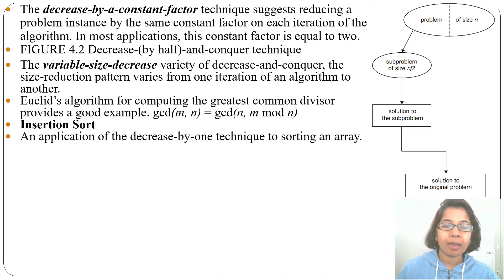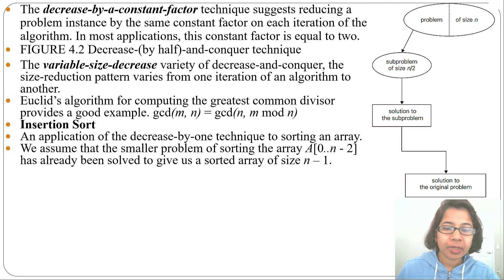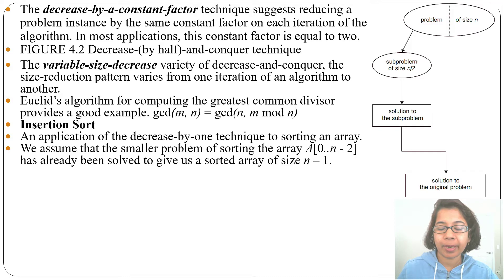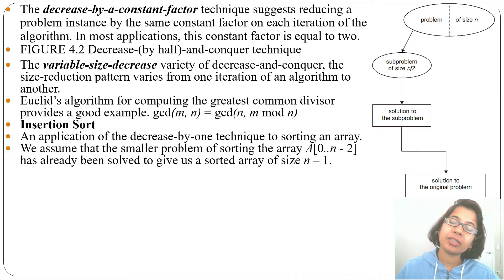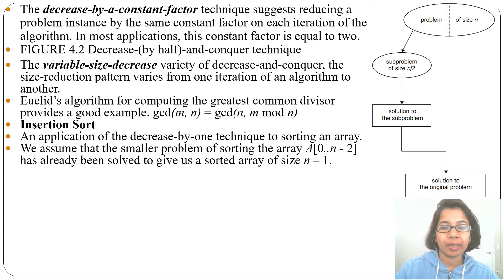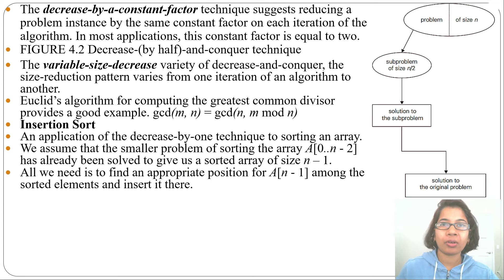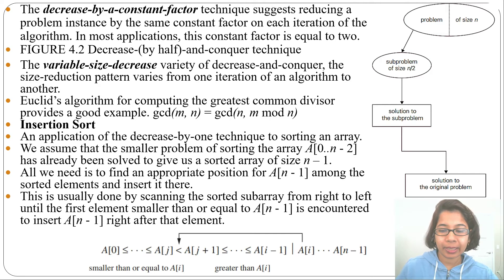The first application is insertion sort — an application of the decrease by one technique to sort an array. In insertion sort, we assume that the smaller problem of sorting an array A[0] to A[n-2] has already been solved, giving us a sorted array of size n-1. We then check from right to left to find the proper position to insert the next element.